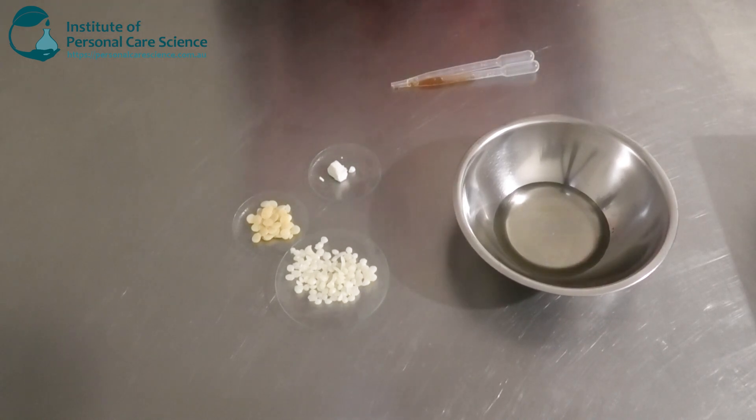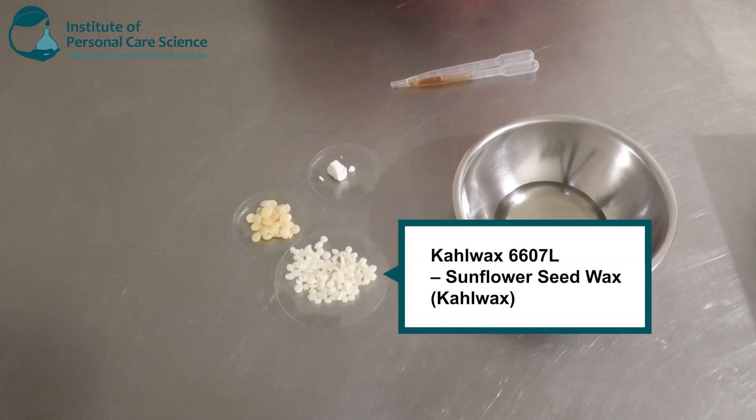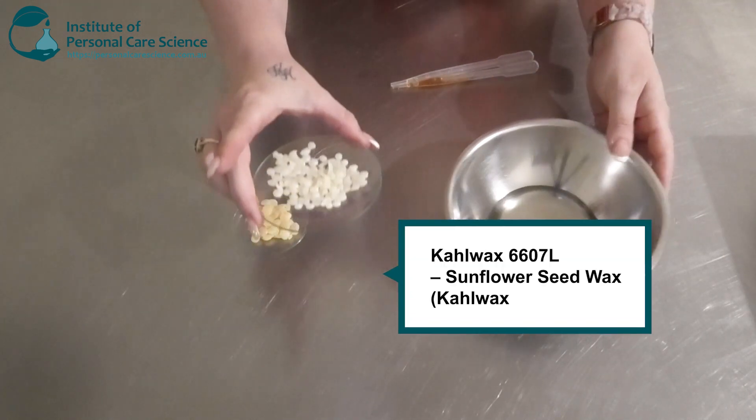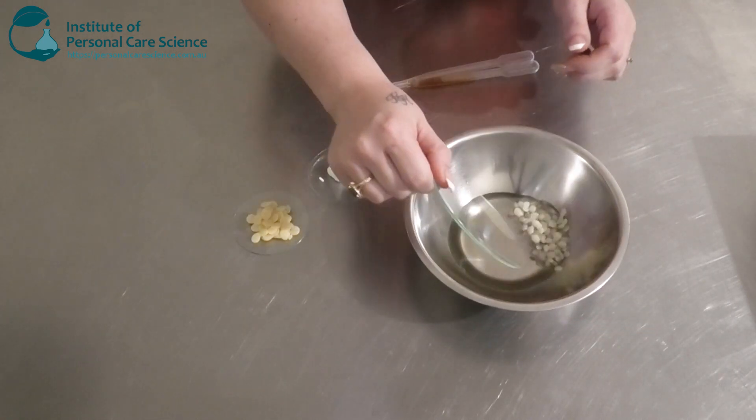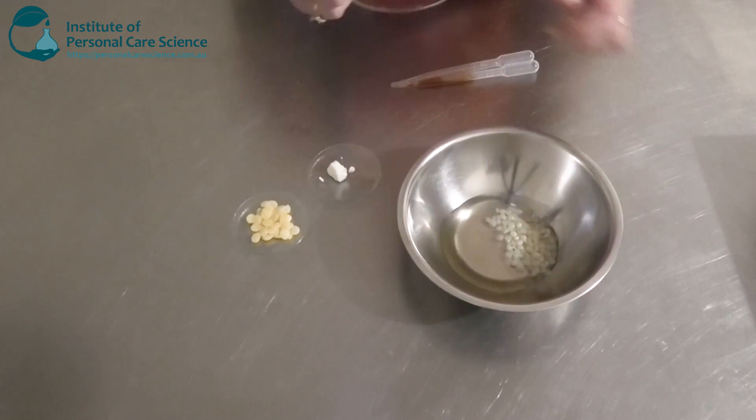Next is my waxes. Now the first one I'm going to add to my mix is the Kahl wax sunflower. So this is a really stable, soft hard wax—it's more of a hard wax—this is going to add really good stick consistency here.